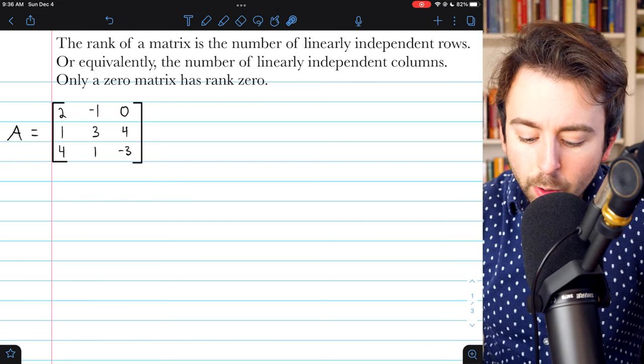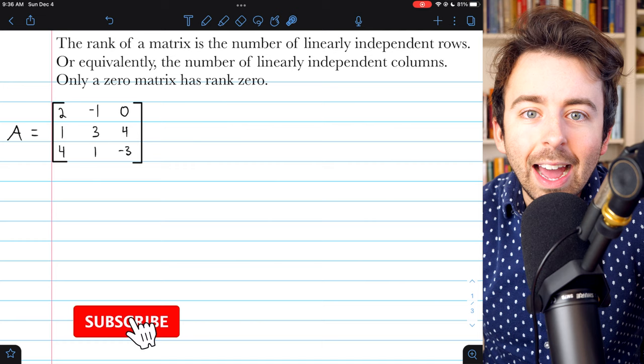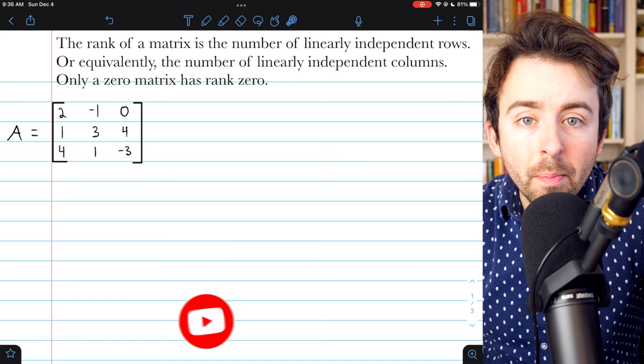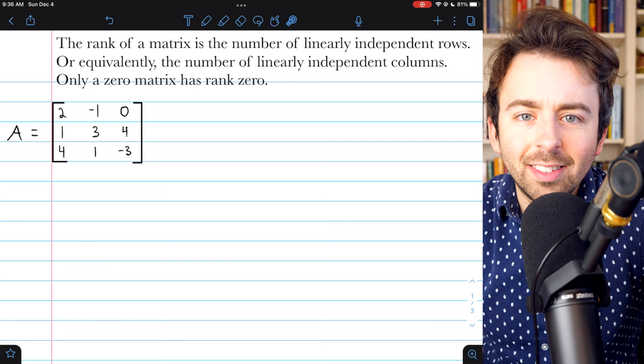The rank of a matrix is the number of linearly independent rows that it has, or equivalently, the number of linearly independent columns. The rank of a matrix is always positive, except in the case of the zero matrix, which has rank zero.